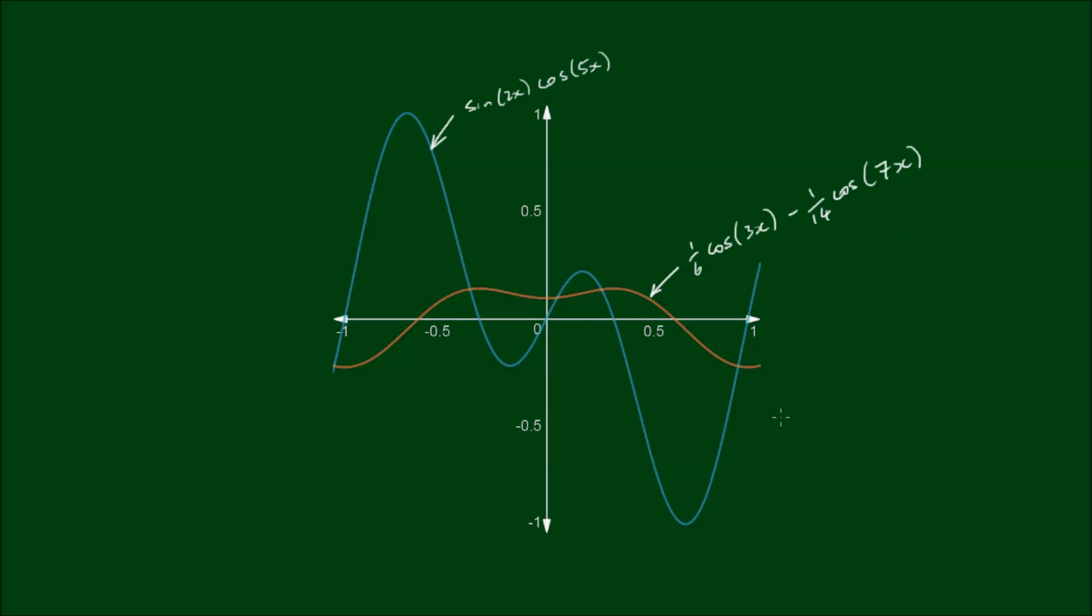So what we're looking for here is this turquoise curve is supposed to be the slope function of the orange curve, so let's just visually confirm that. So at these points here, we've got a local minimum, and we've got two local maxima here and here.